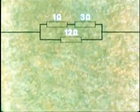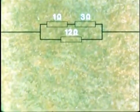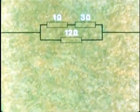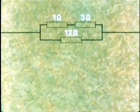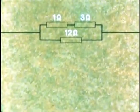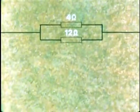Let's look at one more. This time we must deal with the series part first. 1 plus 3 is 4. So the upper branch is equivalent to a single resistance of 4 ohms.